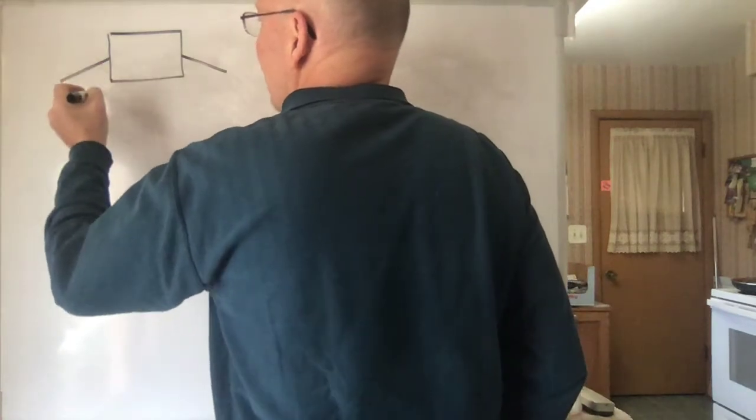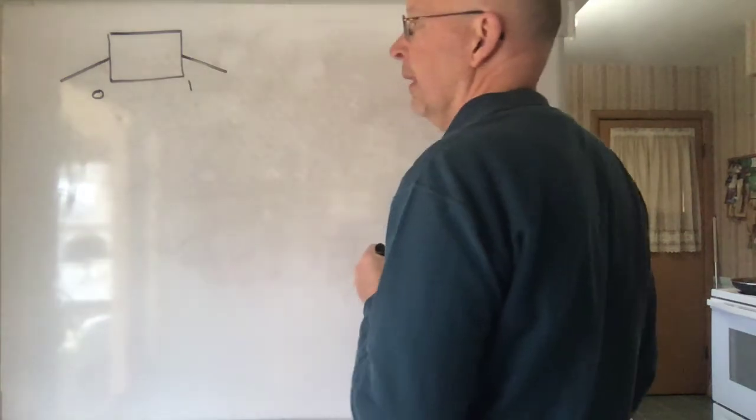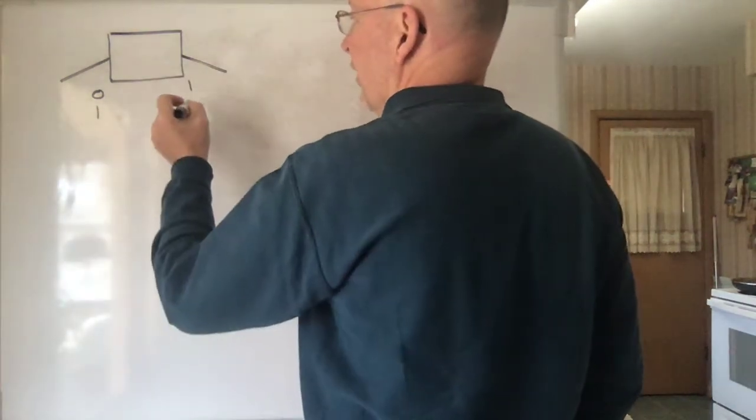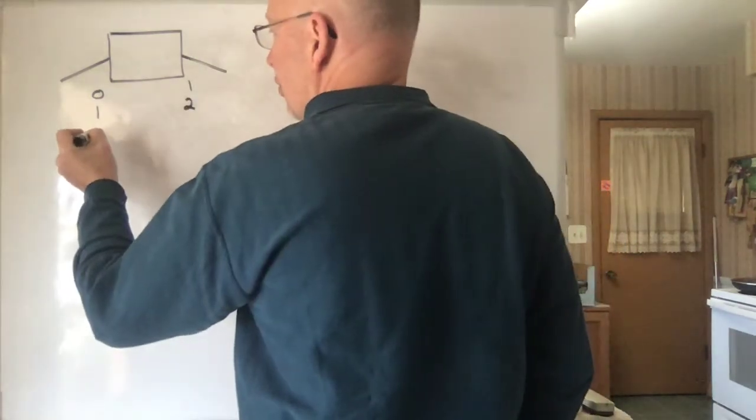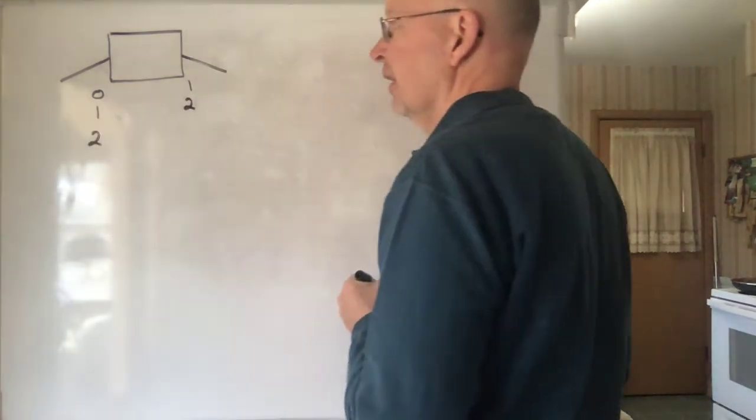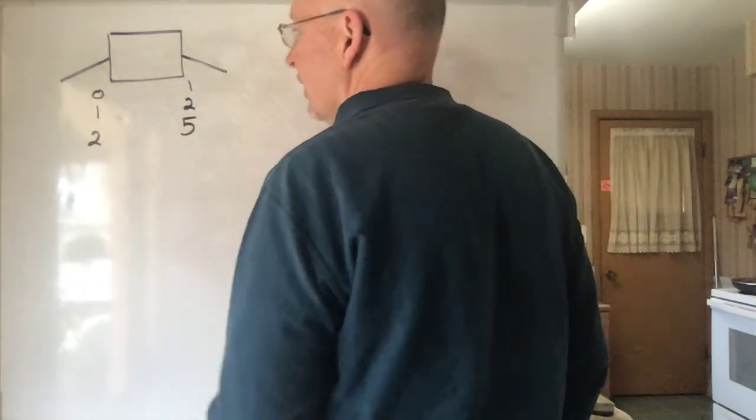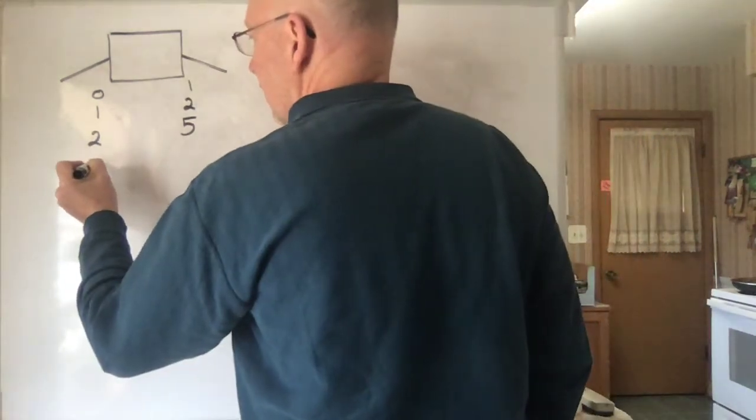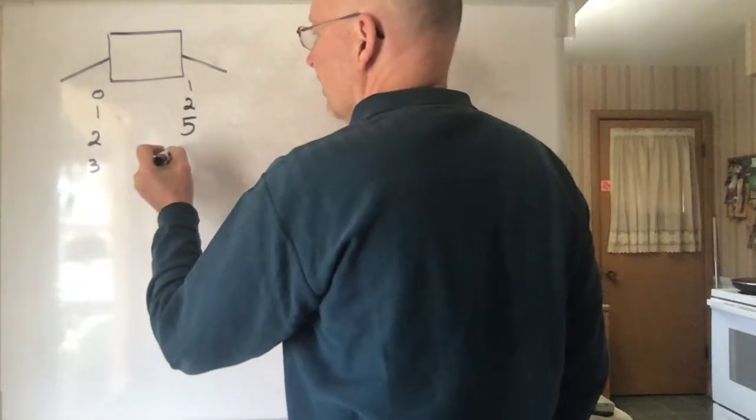If you throw in a zero, you get a one out. If you throw in a one, this machine does something and throws out a two. If you put in a two, the machine does something to it and out comes a five. Did that surprise you? If you put in a three, the machine does something to it and throws out a ten.